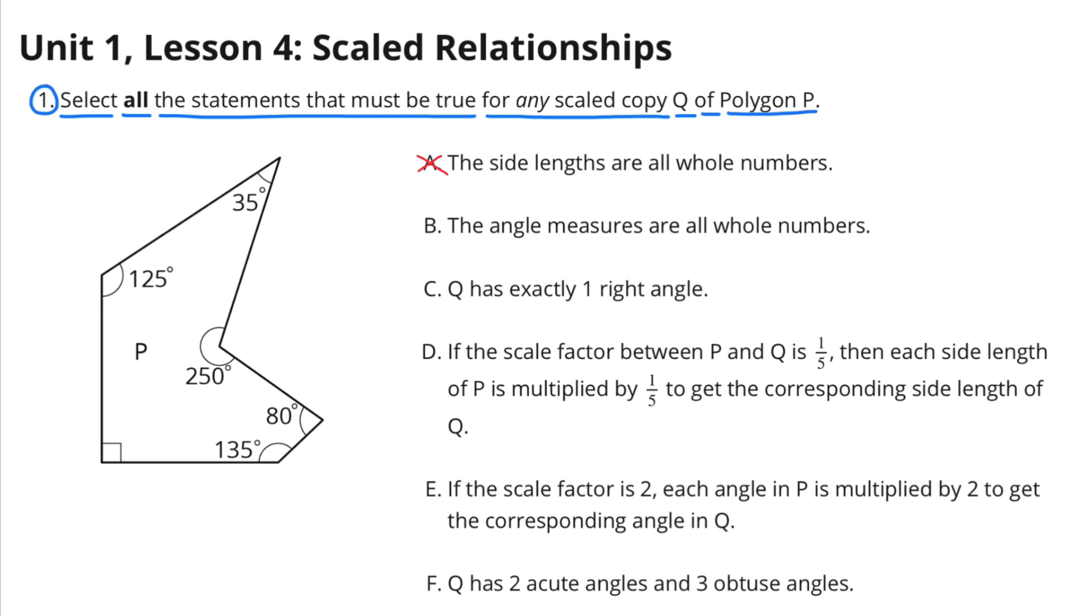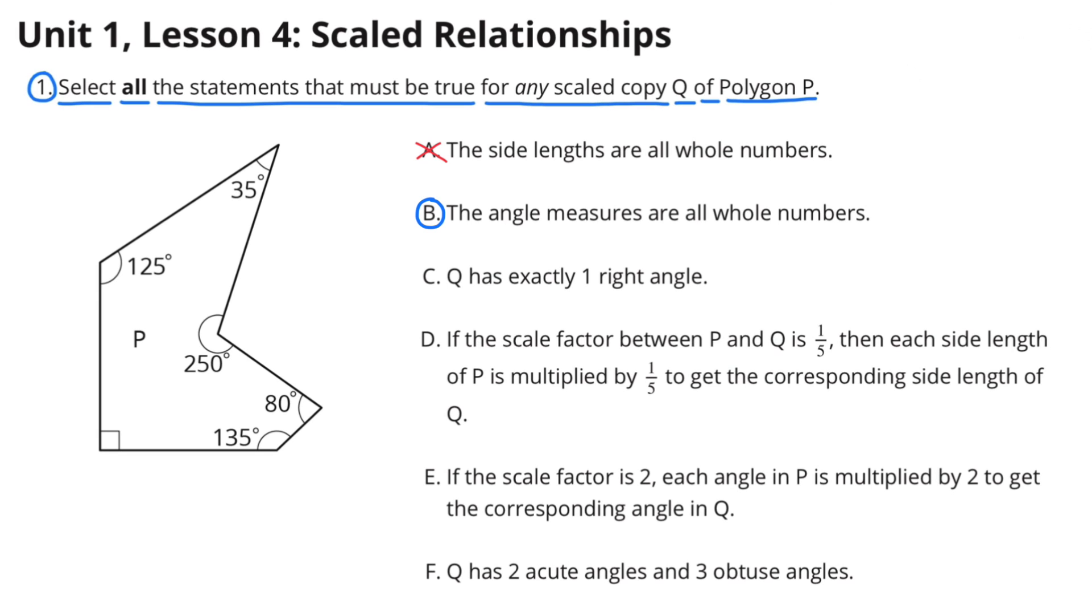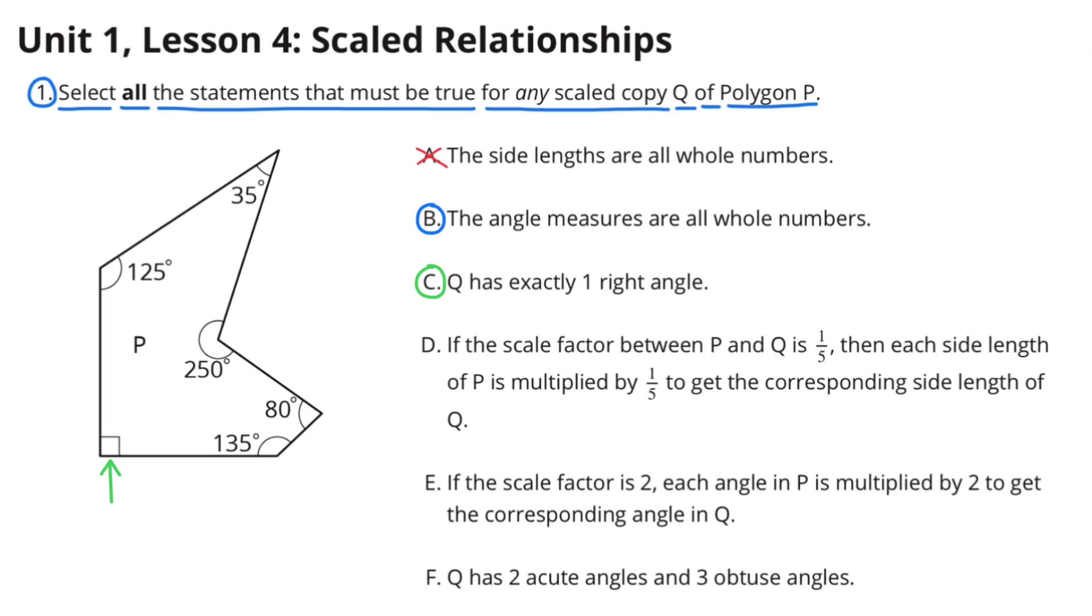I did not select A because we don't know if all the side lengths are whole numbers. I did select B because we can see that all the angle measures are whole numbers. I selected C because Q has exactly one right angle located on the bottom left hand corner.